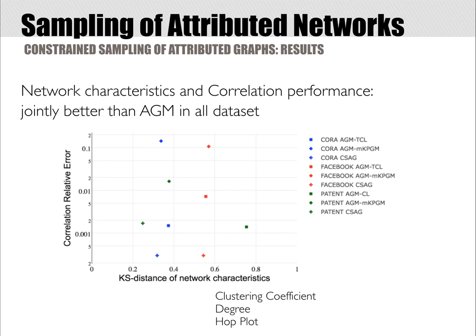The figure shows the combined error for attributes in the structure: the attributes' error in the y-axis, and the structural errors in the x-axis, for which we consider the clustering coefficient, degree, and hop plot distributions. The best performers are to the bottom left, closer to the origin. As shown in the figure, CISAC is the best performer with the lowest combined error for all three datasets.